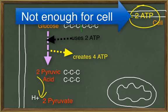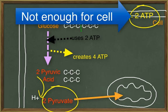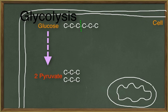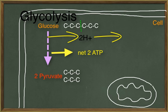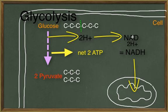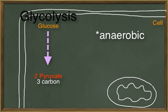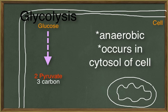This amount of ATP is not enough for the cell to survive, but the pyruvate molecules hold much energy that will be used in the mitochondria to create more ATP. In addition to the ATP produced, the process of glycolysis will lose two hydrogen atoms, which will be transferred to a hydrogen carrier called NAD. When the two hydrogen atoms are transferred to NAD, the molecule becomes NADH. The hydrogen will be carried to the electron transport system in the mitochondria. Glycolysis is anaerobic because it does not require oxygen and occurs in the cytosol of the cell.